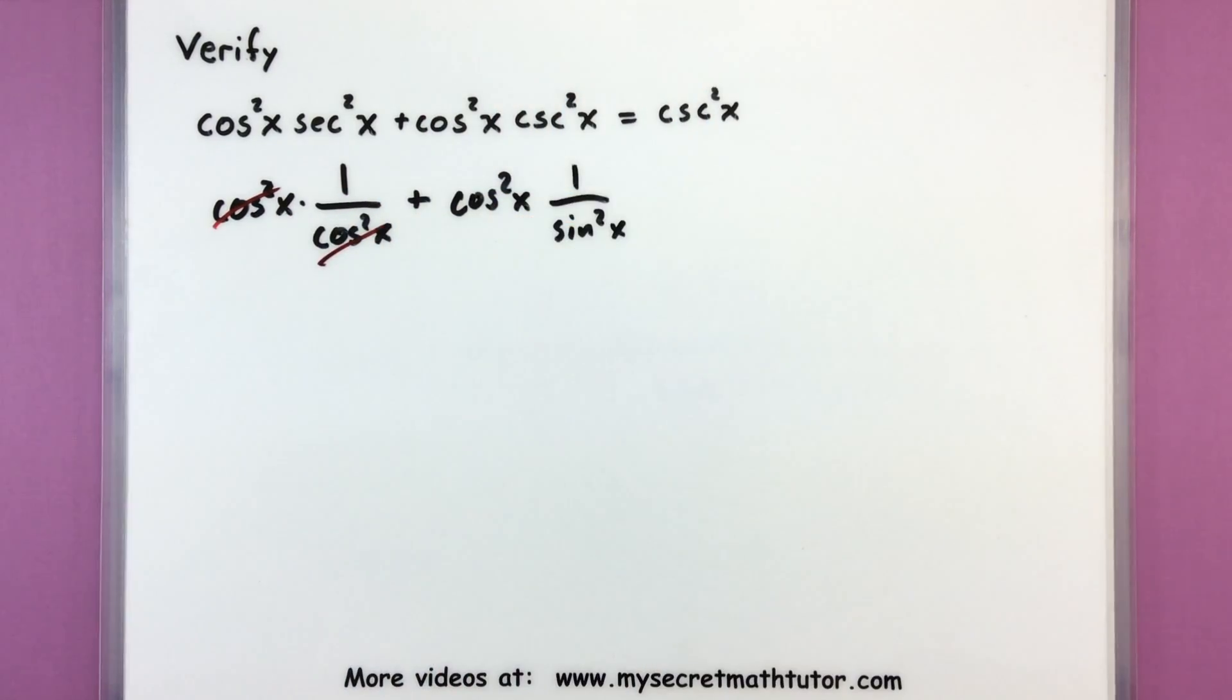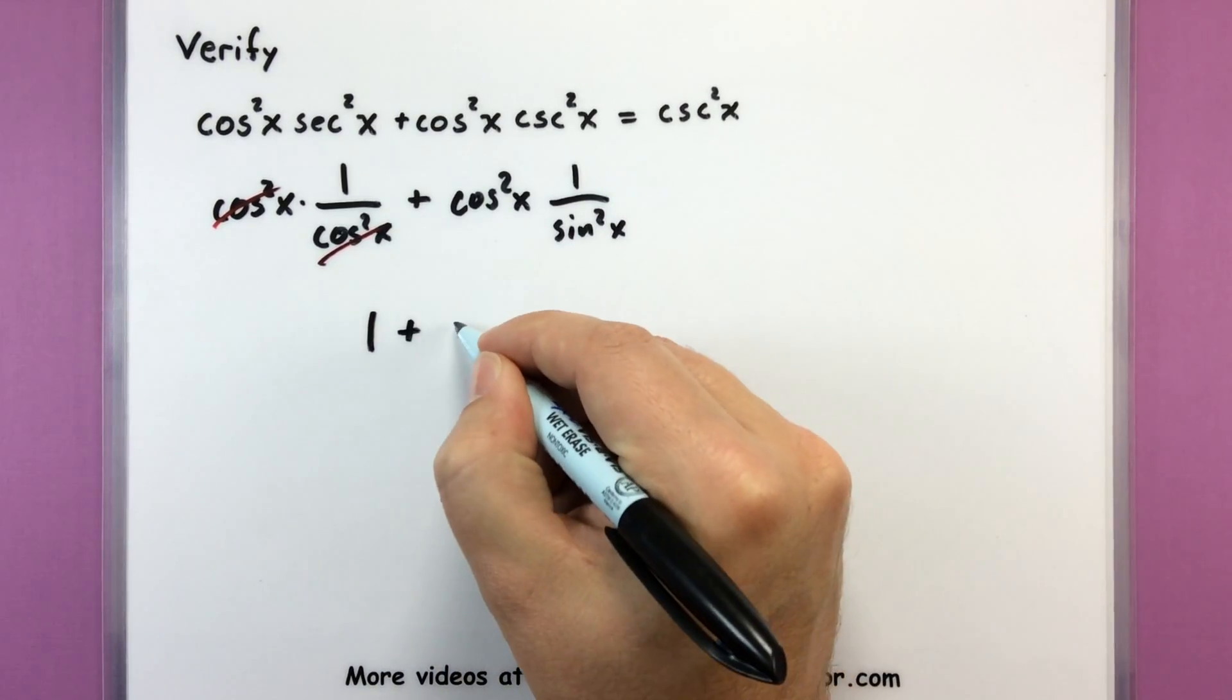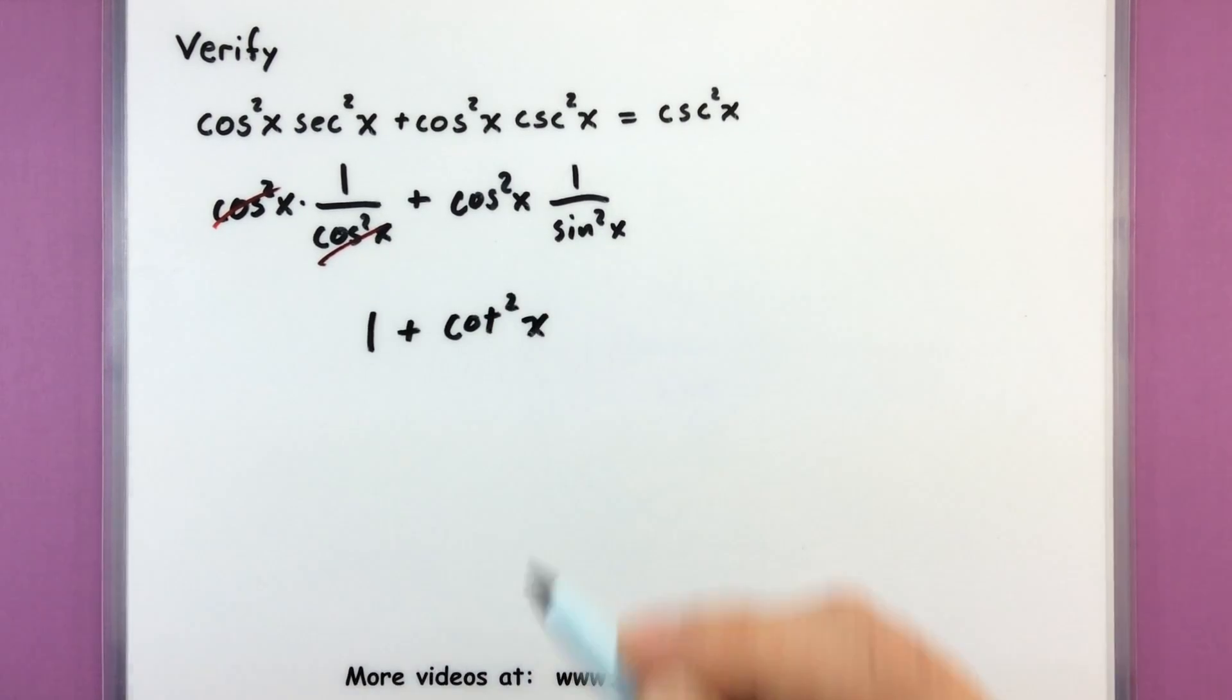So that's a little bit better. At least I can cancel out these cosines. We don't have to worry about those. And cosine squared over sine squared, that's actually equal to my cotangent. So 1 plus cotangent squared of x.